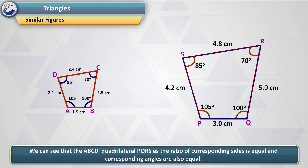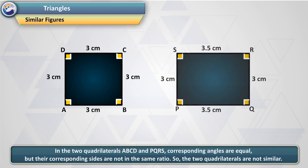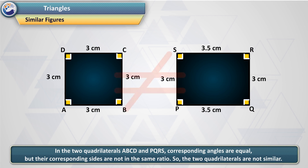We can see that quadrilateral ABCD and quadrilateral PQRS have the ratio of corresponding sides equal and corresponding angles also equal. Note: if quadrilateral ABCD is similar to PQRS, and PQRS is similar to WXYZ, then ABCD is similar to WXYZ. You may note that in the two quadrilaterals ABCD and PQRS, corresponding angles are equal, but their corresponding sides are not in the same ratio. So, the two quadrilaterals are not similar.